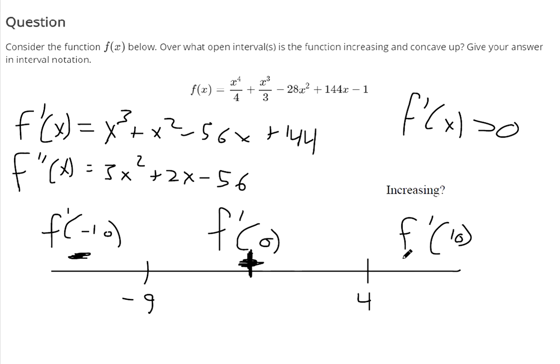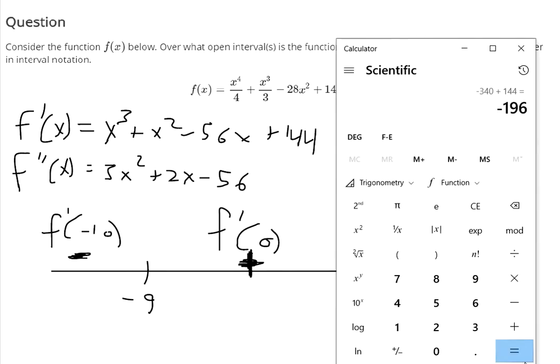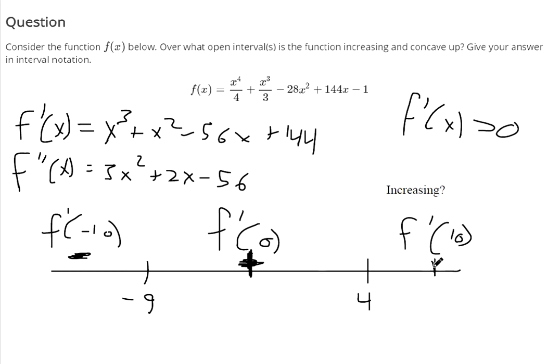And then at 10 of the first derivative, 10³ is 1000, 1100, 1100 minus 560 plus 144. That makes 684. So it's positive here.